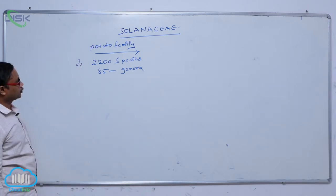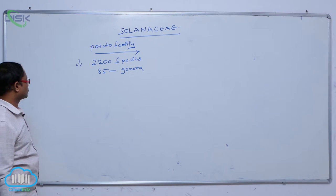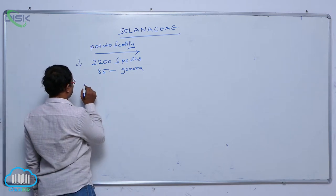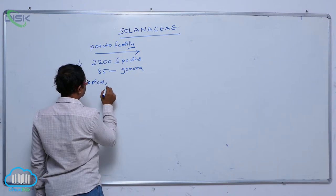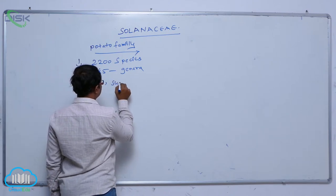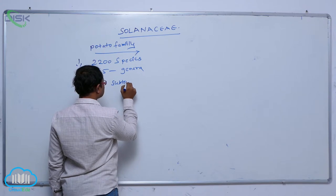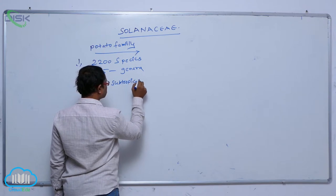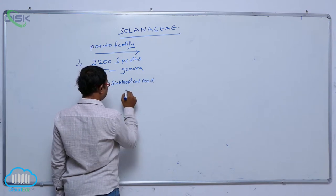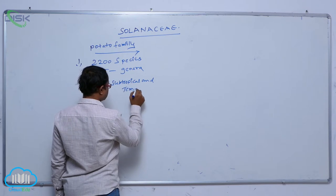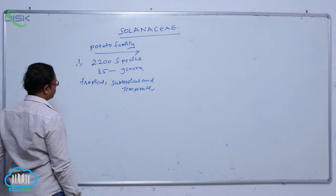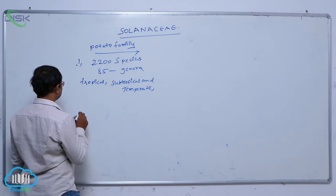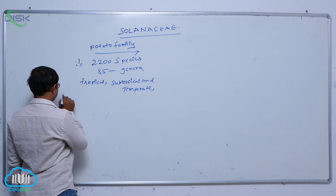85 genera represent 2,200 species. Generally they are grown in tropical, subtropical and temperate regions. That is known as the habitat. So in these, some important plants.